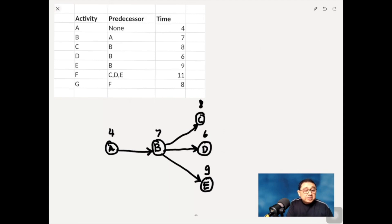And so after C, D, and E have finished, I can draw F. So I can draw an arrow from C to F, and then D to F, and then E to F, and then I assign 11 there.